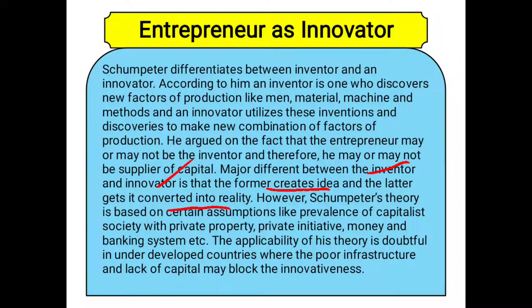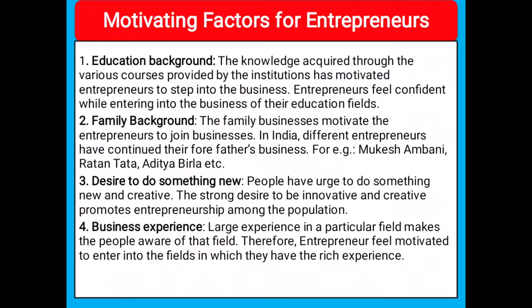However, Schumpeter's theory is based on certain assumptions, such as the prevalence of a capitalist society with private property, private initiative, and a money and banking system. The applicability of his theory is doubtful in underdeveloped countries where poor infrastructure and lack of capital may block innovativeness. In summary, entrepreneur is seen as a risk bearer by some, as an organizer by others, and as an innovator by yet others — but in all views, the entrepreneur is a person related with economic activities.